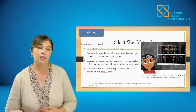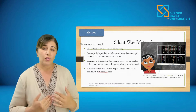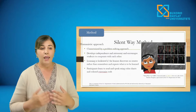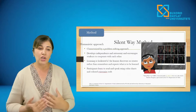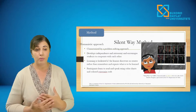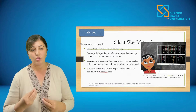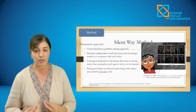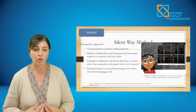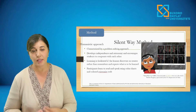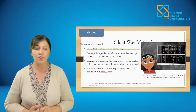Next is the silent way method, part of the humanistic approach. It is characterized by a problem-solving approach where the teacher presents topics through colorful charts and tries to develop independence, autonomy, and cooperation among students. Students look at charts and work with peers to think about rules and come up with their own ideas. Learning is facilitated by discovery — the learner is urged to discover or create rather than remember or repeat. Participants learn to read and speak using colorful charts and colored Cuisenaire rods.